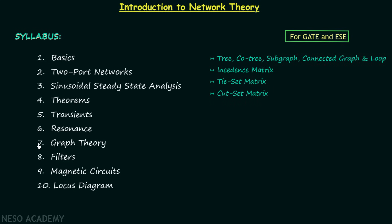Chapter number 7 is Graph Theory. In this chapter we will understand what is tree, cotree, subgraph, connected graph, and loop. Then we will understand incidence matrix, tie set matrix, and cut set matrix. We will also find out the relation between cut set matrix and tie set matrix.